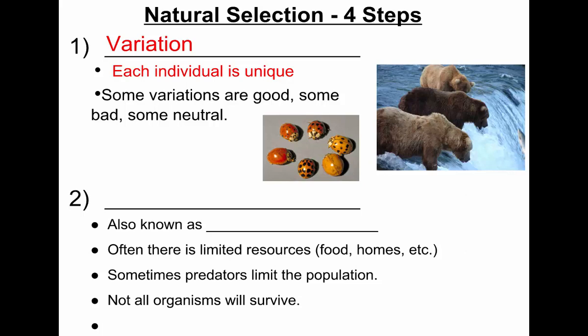So here we see this variation in these ladybugs. Now, the important factor — can an individual adapt or evolve? No. Species, populations, groups of organisms can adapt and evolve. This ladybug cannot evolve to have dark spots — if it's born like that, it's going to die like that. This bear cannot just change its fur color. It's born with that color and that's not going to change. That's why we say individuals don't evolve; it's the species as a whole that does.